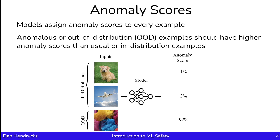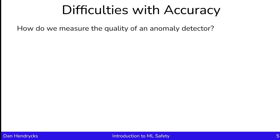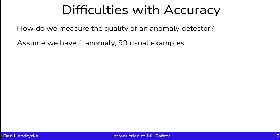To assess the performance of an anomaly detector, we'll need a metric. Unfortunately, the typical accuracy metric won't be that useful in this situation. To see the limitations of accuracy, let's consider the following concrete example. Let's assume that we have one anomaly and 99 usual examples.